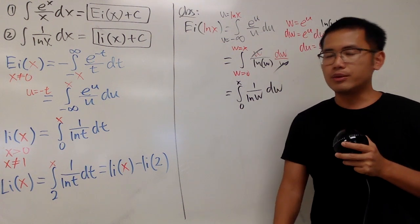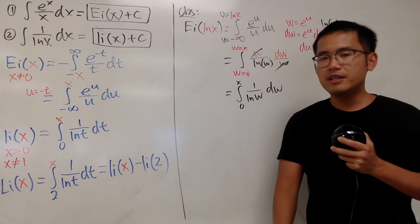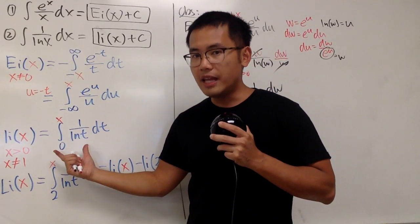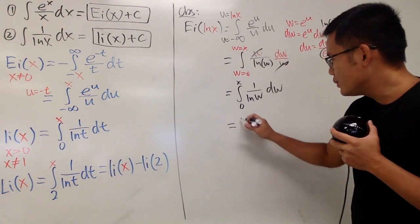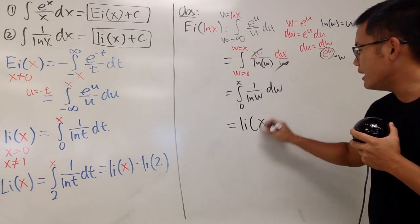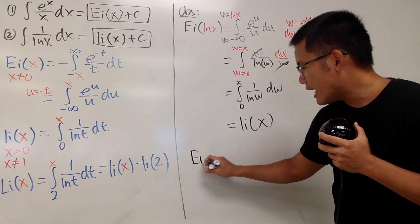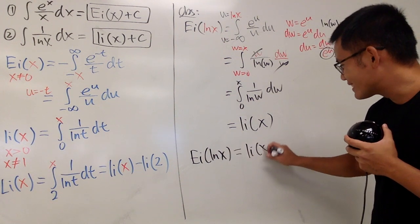And usually, as I like to tell you, I like to tell you guys that don't let u bother you. But in this video, I will tell you, don't let w bother you. This right here is actually the same as that. Namely, we just get li(x). So this is nicely equal to li(x). So as you can see, we have Ei(ln(x)). This is equal to li(x).